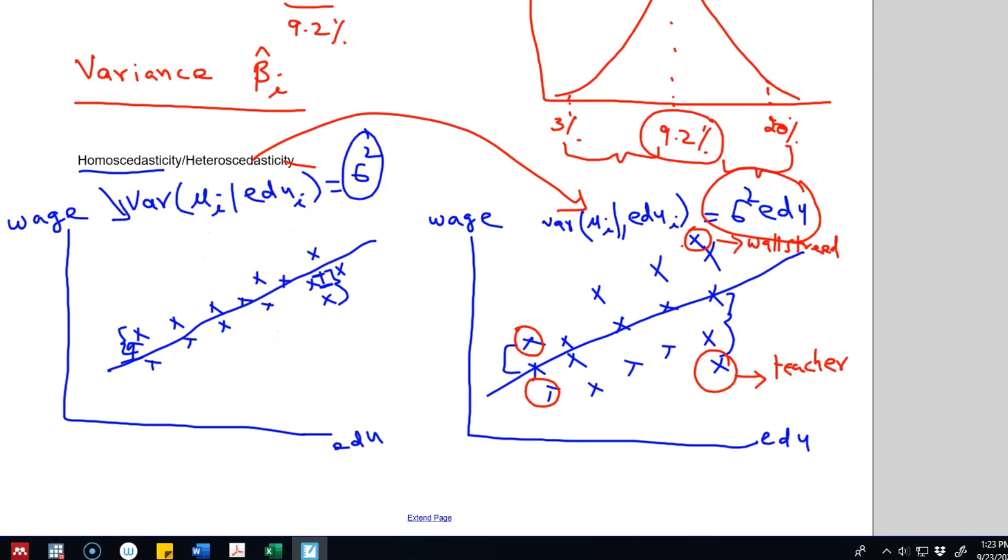So we want our residuals to show homoscedasticity rather than heteroscedasticity, and this homoscedasticity makes the calculation of prediction intervals easier. Now it may not be possible to improve our predictions even with homoscedastic residuals.